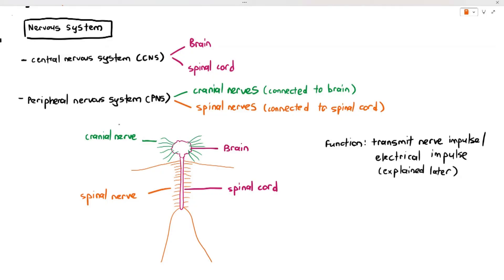These nerves basically help together with the central nervous system. The cranial nerves and spinal nerves are supposed to transmit electrical impulses, and I will explain what electrical impulse or nerve impulse is in the next video.